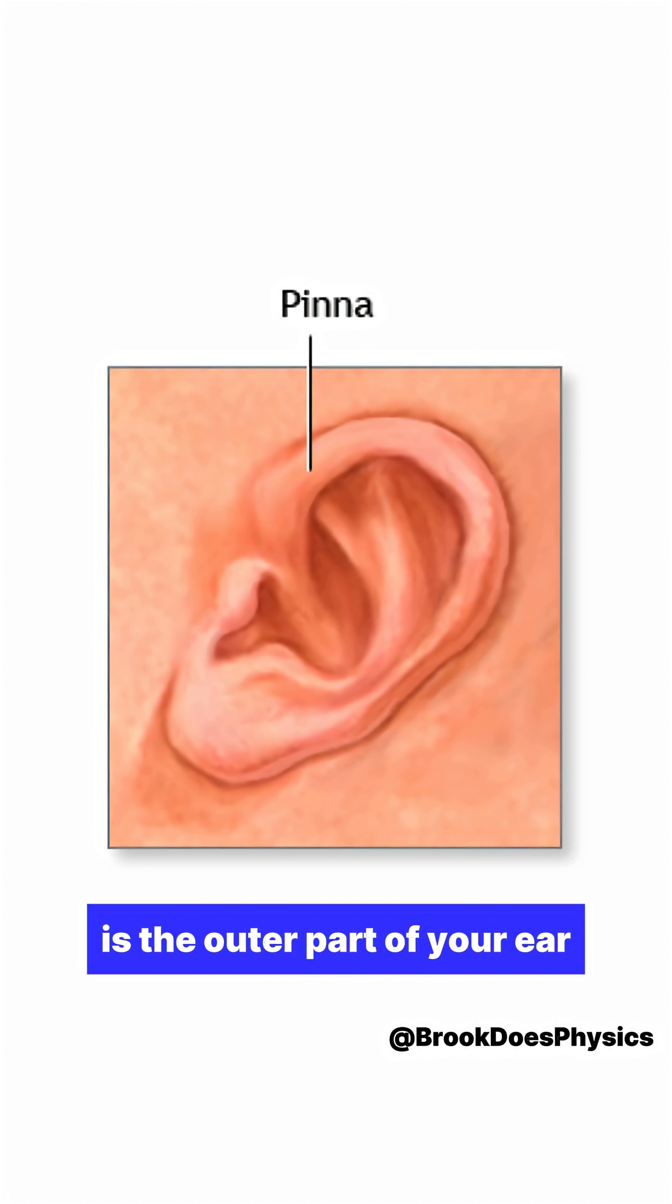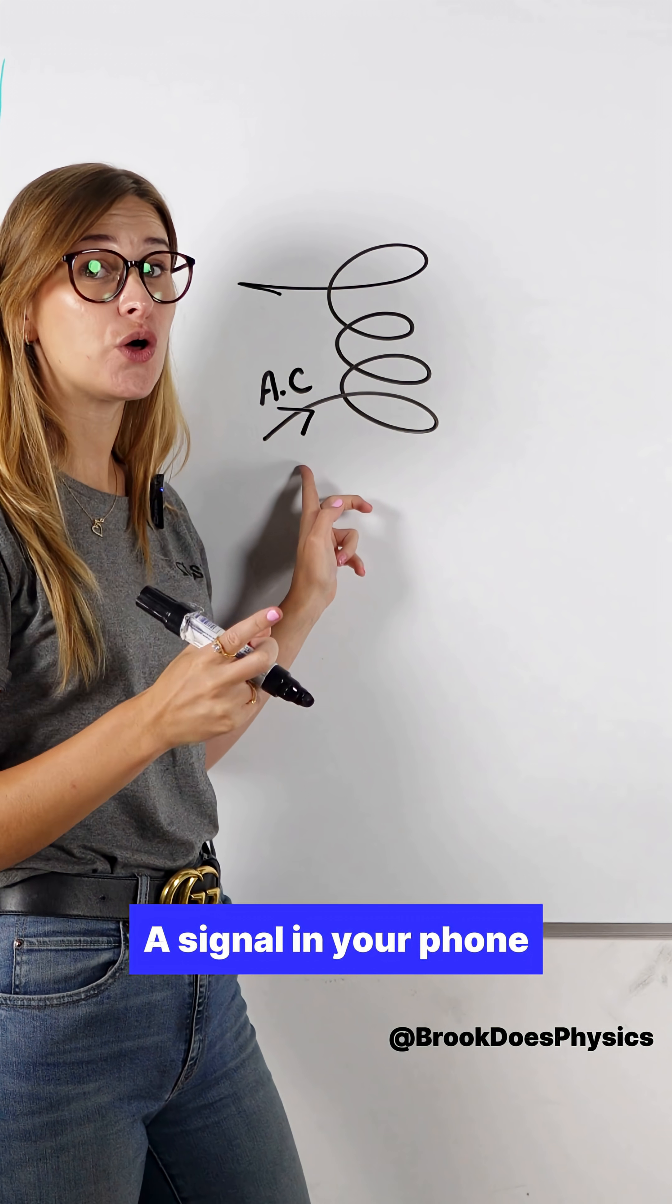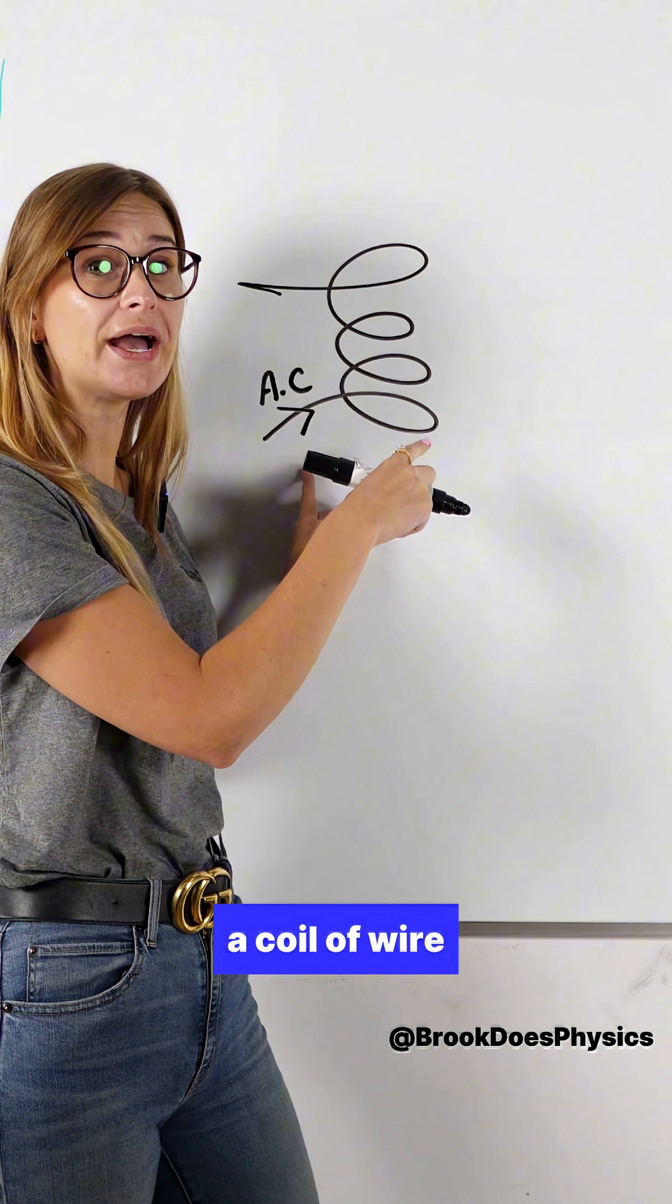The pinna, which is the outer part of your ear, funnels these sound waves into your eardrum. A signal in your phone transmits through a coil of wire, creating a magnetic field.